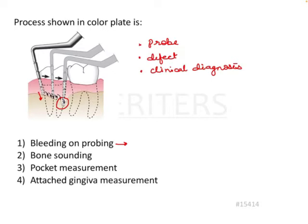Does the probe go till the level of bone? No, it only goes till the level of the gingival sulcus — only till the level of pocket depth or sulcus depth, not to the level of bone. So bleeding on probing is not the correct answer.